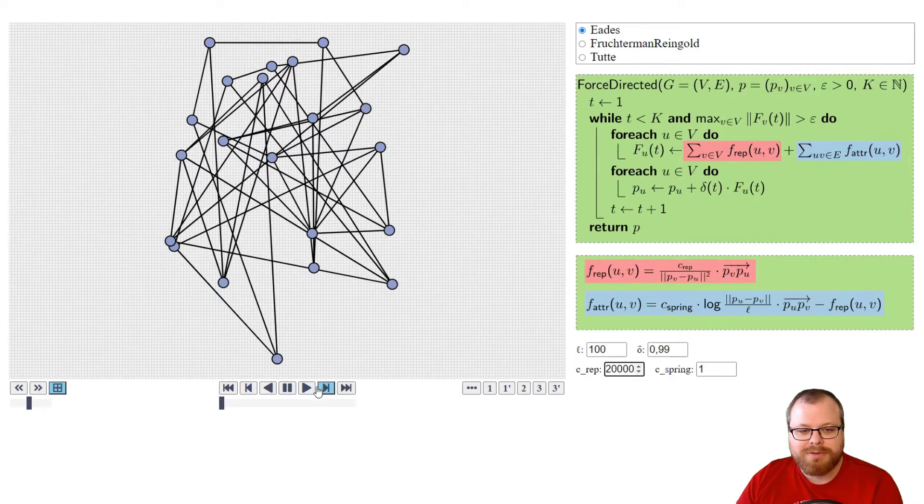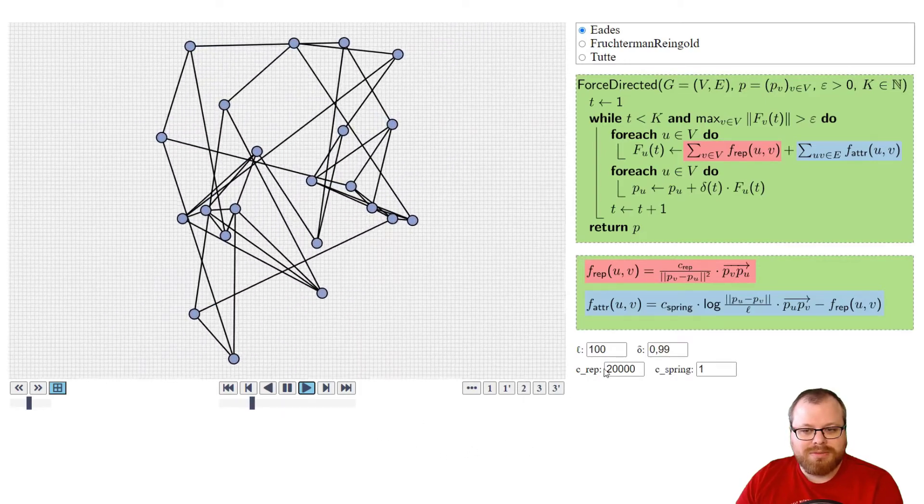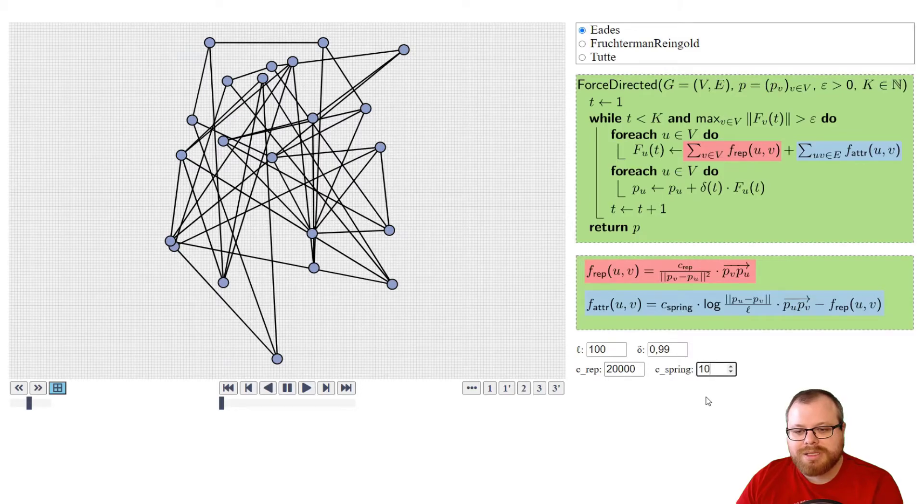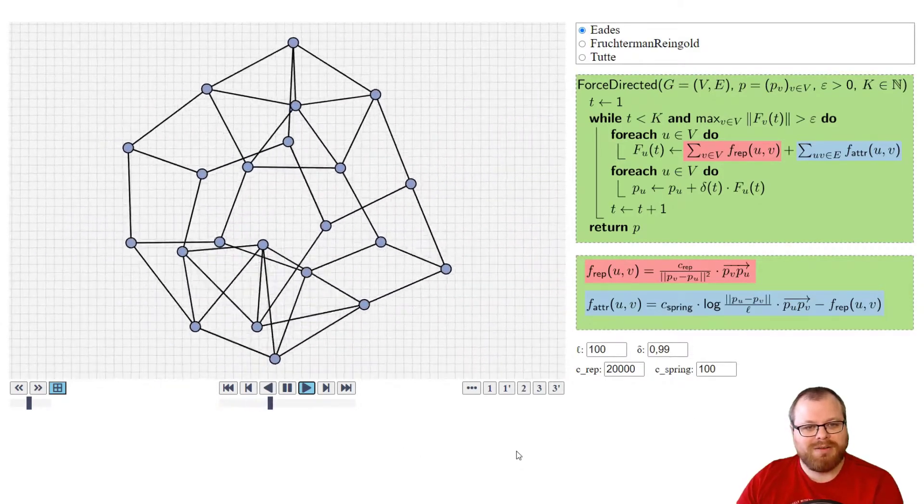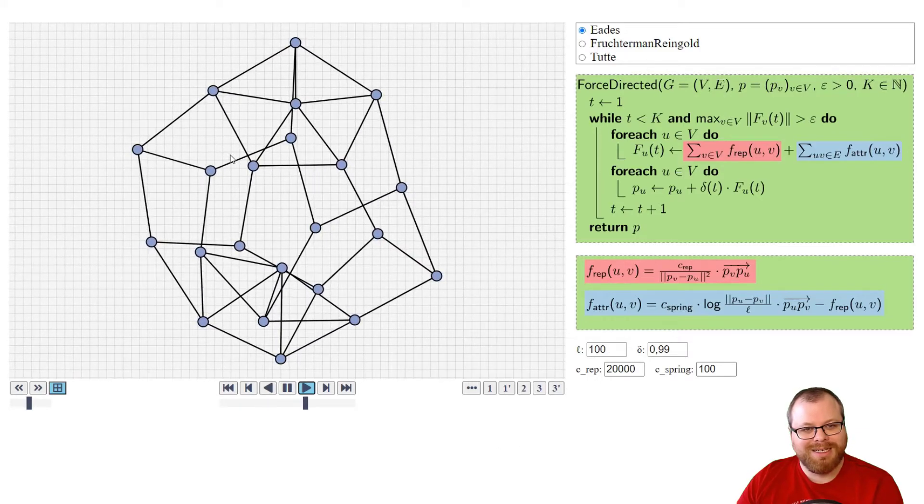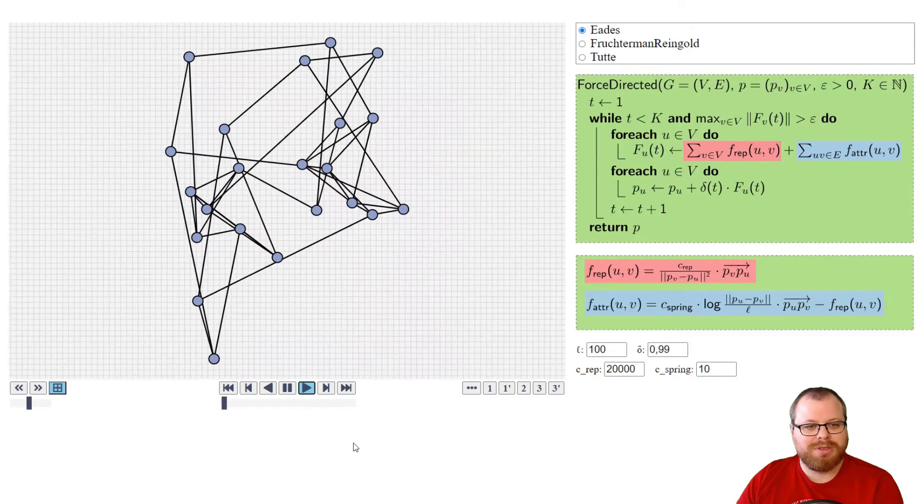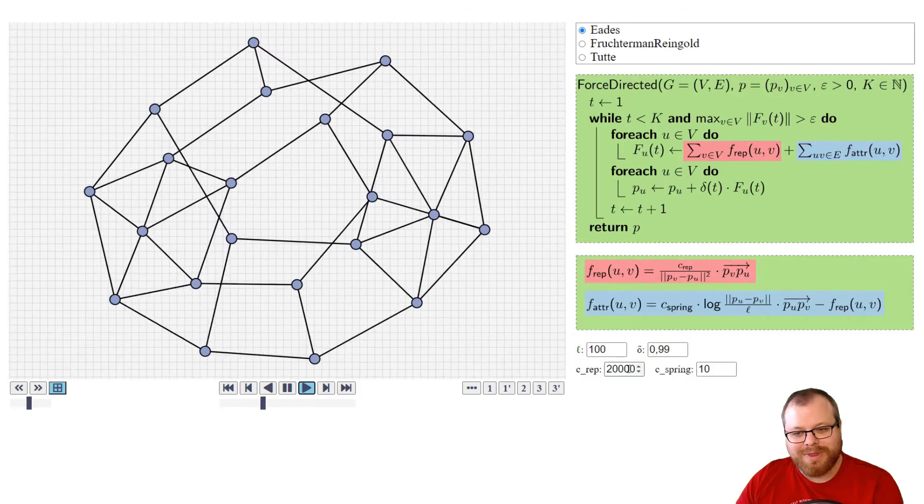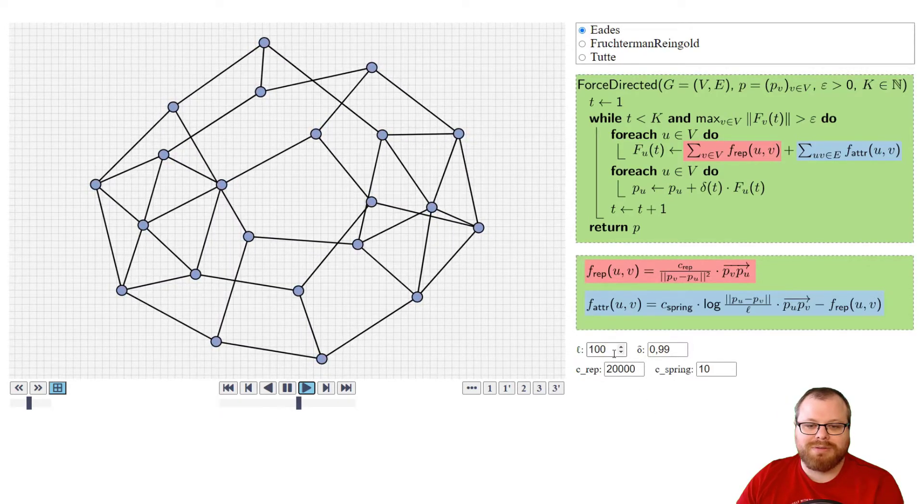This is not enough yet, as you can see. But if I also change the spring constant, then something very weird can happen in the beginning, but after a while we get to an equilibrium. Let's make this a bit smaller. And now we found a good choice. Here with these constants, we get a nice drawing where we have the required length.